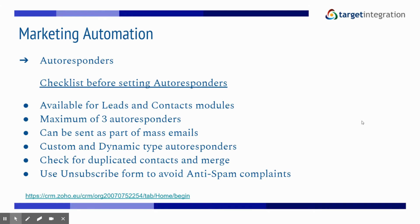There are custom and dynamic type autoresponders. The custom view selected for the autoresponder must contain new data — if you select a custom view where the data is not new, the autoresponder will send the first email to the same old data during subsequent iterations. When setting up dynamic autoresponders, always select the custom views according to the options in the recurrence pattern section.